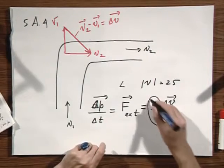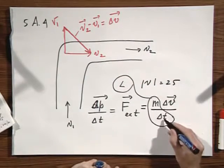But what is M divided by delta T? That's this L. That's the number of kilograms per second.